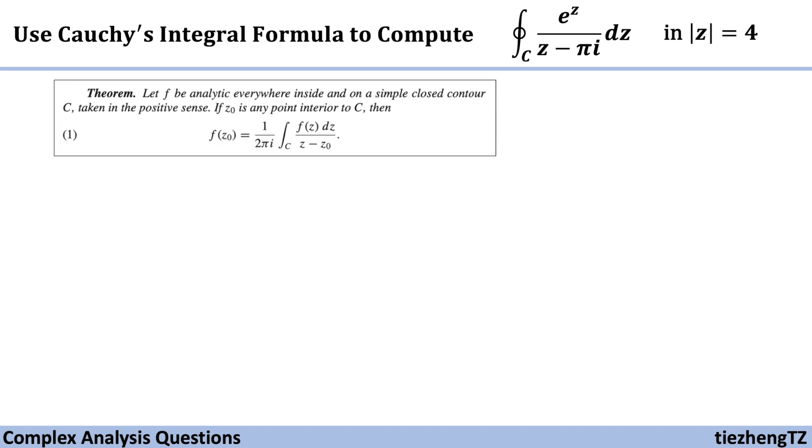First let's take a look at Cauchy's integral formula. If the function f is analytic everywhere inside and on a simple closed contour C, and if z₀ is any point interior to this closed contour C, then we can use the formula: f(z₀) = 1/(2πi) ∫_C f(z)/(z-z₀) dz.